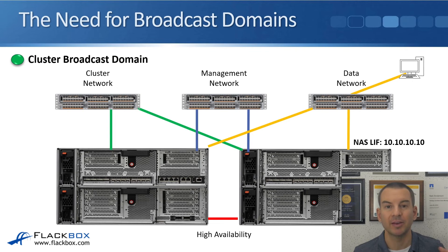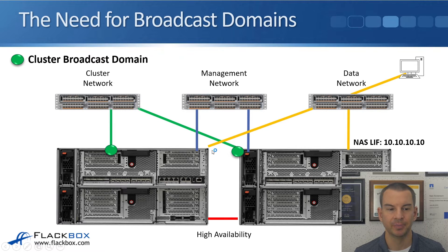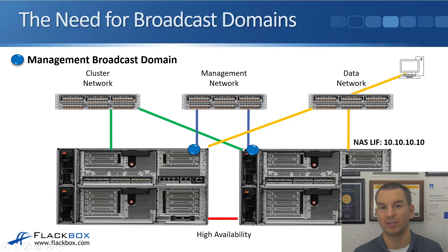Going back to the picture: for the cluster network, we have a cluster broadcast domain containing the two ports connected to the cluster network. If a LIF on either port goes down, it can failover to the other port with the same connectivity. Next, we have a broadcast domain for the management network — the two physical ports connected to the management network go into the management broadcast domain. If either port goes down, LIFs can failover to the other port in the same broadcast domain, so clients still have access.